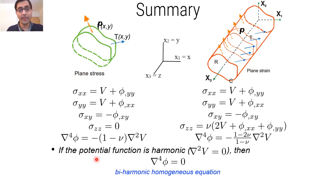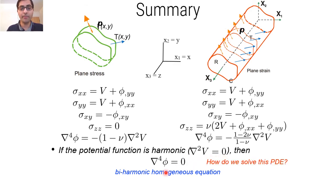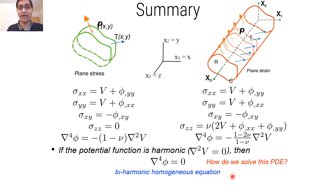If the potential function v is harmonic — meaning delta2(v) equals zero — we get delta4(phi) equal to zero. We call that the biharmonic homogeneous equation.